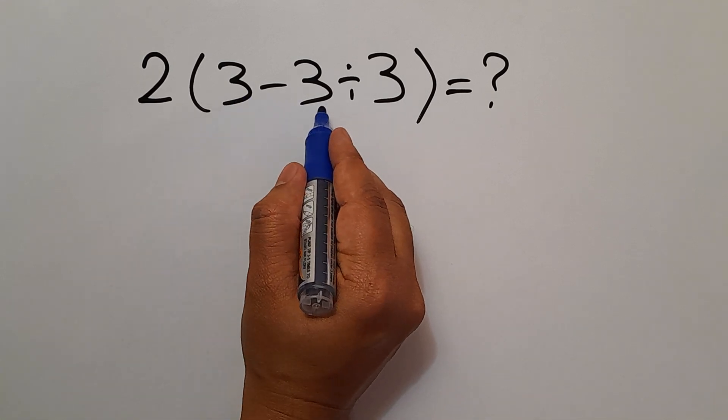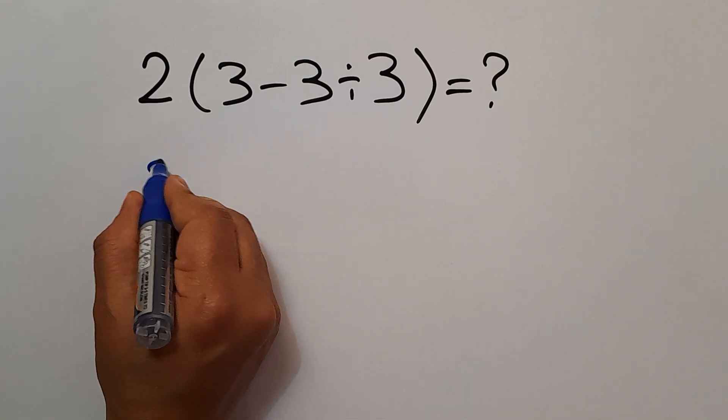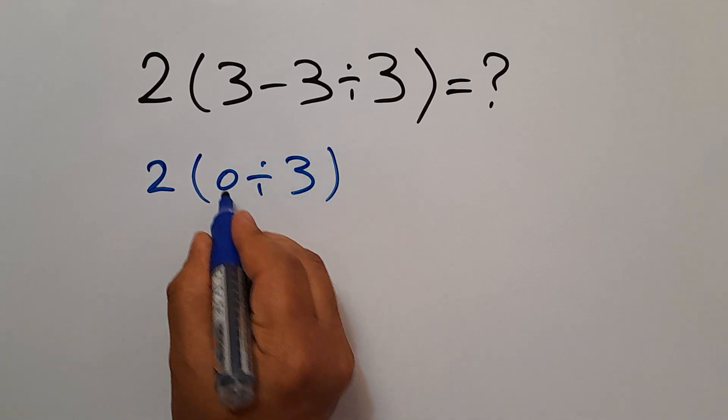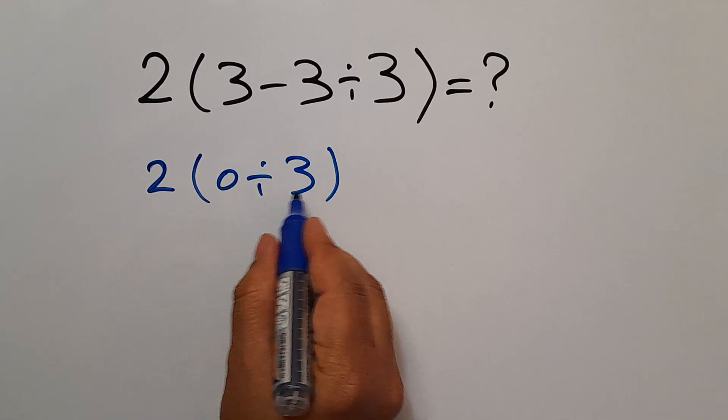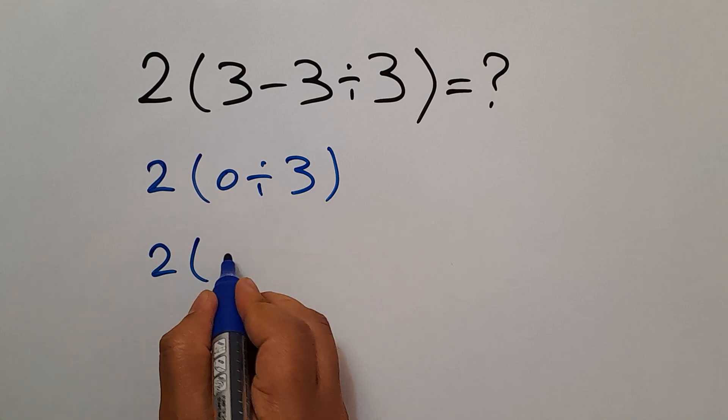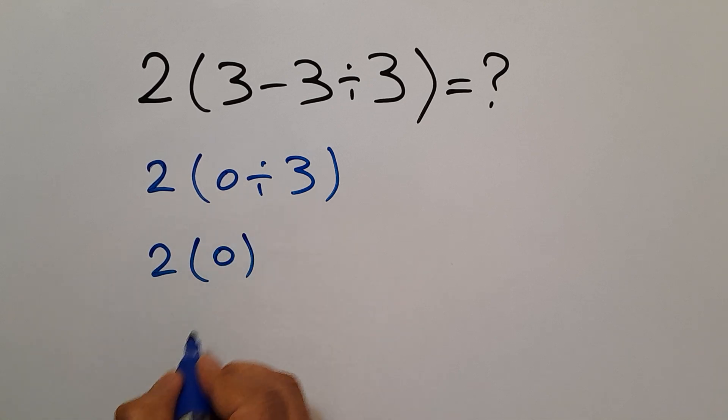3 minus 3 equals 0. So 2 times 0 divided by 3. And 0 divided by 3 gives us just 0. So 2 times 0. And 2 times 0 is equal to 0. But this answer is not correct.